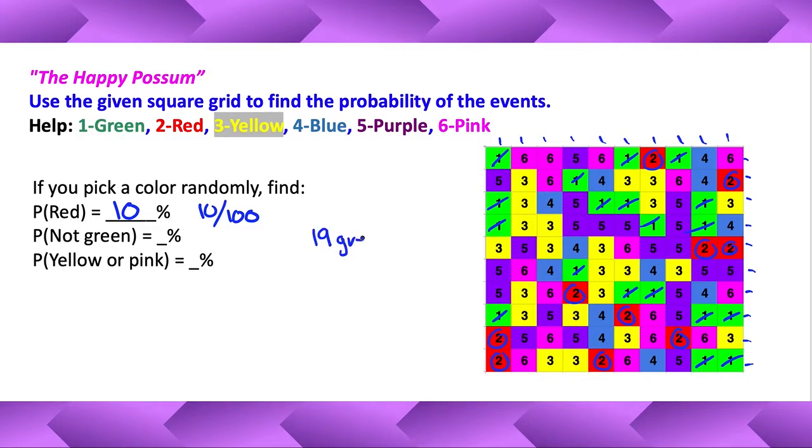So if we have nineteen greens, how many are going to be not green? Well, if we take one hundred total squares and we take away the nineteen greens, that means eighty-one of them are going to be not green. So eighty-one out of one hundred. Oh shoot, there's no room. I didn't make the blank big enough. You would fit an eighty-one right in there. There we go. Okay, cool. We're almost done.